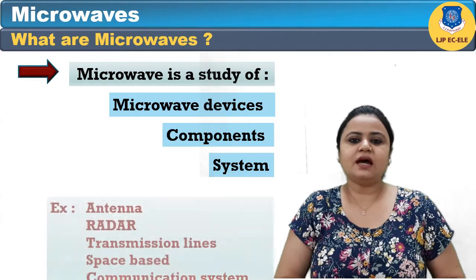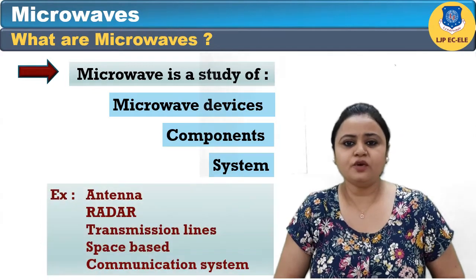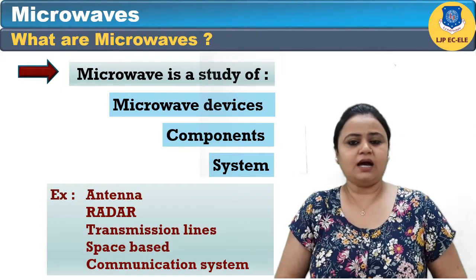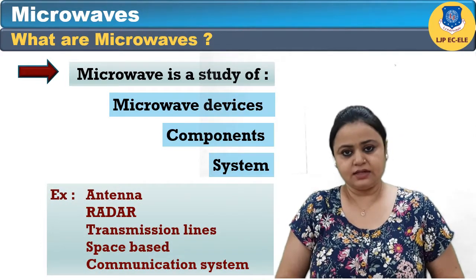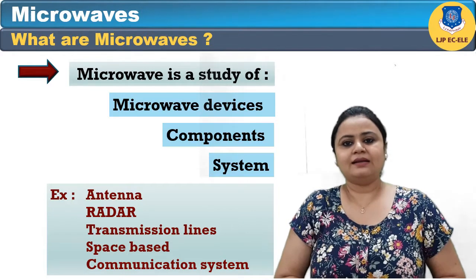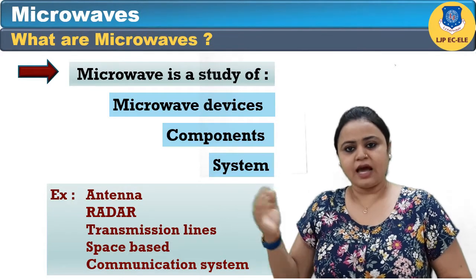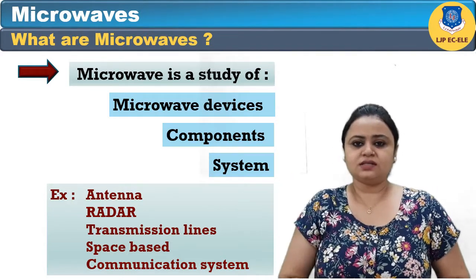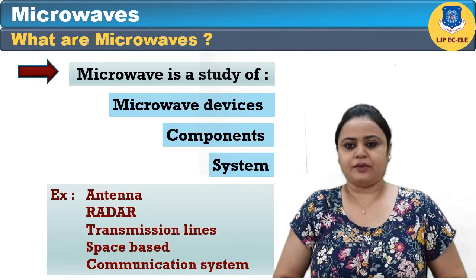Some of the examples of microwave devices and components are like antenna, radar, transmission lines, space-based communication systems, etc.